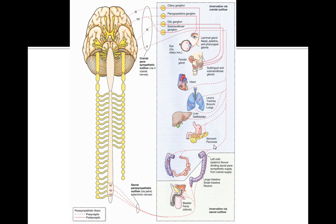Most Comlex questions will test you on which structures receive innervation from the vagus versus the pelvic splanchnic nerves. In the parasympathetic nervous system, you have to remember that the nerve outflow tracts are either in the sacral region or in the cranial parasympathetic outflow region, whereas the sympathetic is generally thoracolumbar. When you're looking at an organ with parasympathetic innervation, you're going to be looking at either the sacral region or the cranial region.